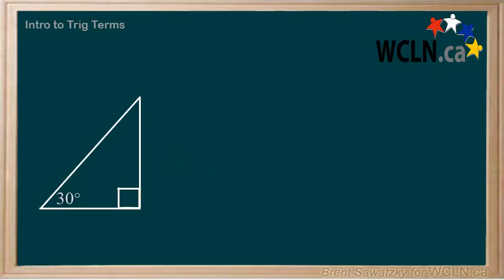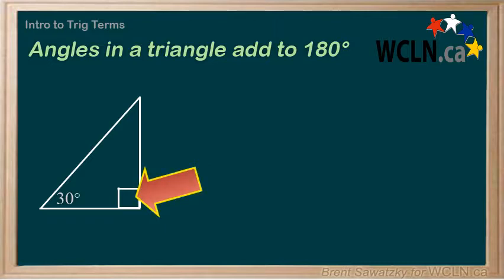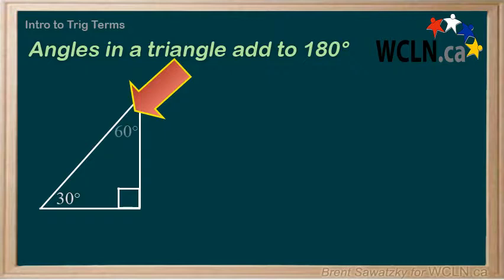Remember that all triangles have internal angles that add up to 180 degrees. Therefore, if we know that this angle is 90 degrees and this angle is 30 degrees, then this angle here must be 90 minus 30, which gives us 60 degrees. So the 90-degree angle in a right triangle will always be our largest angle. The other two angles each have to be smaller, as together they add up to the other 90 degrees.